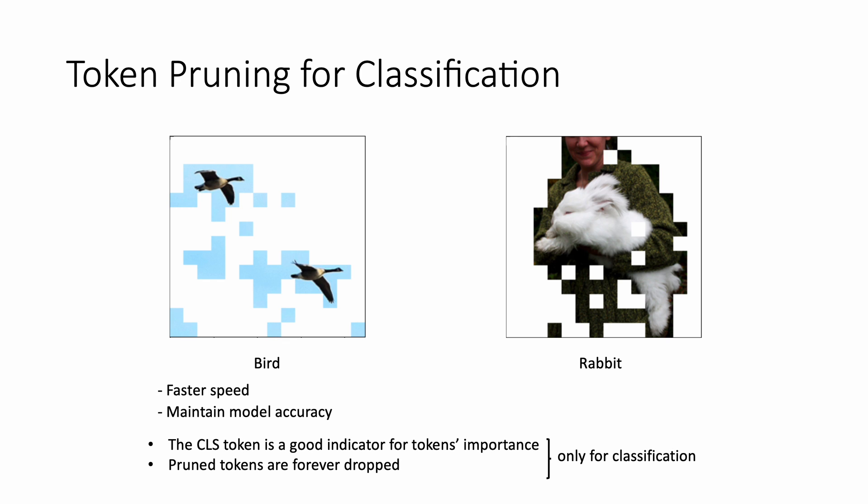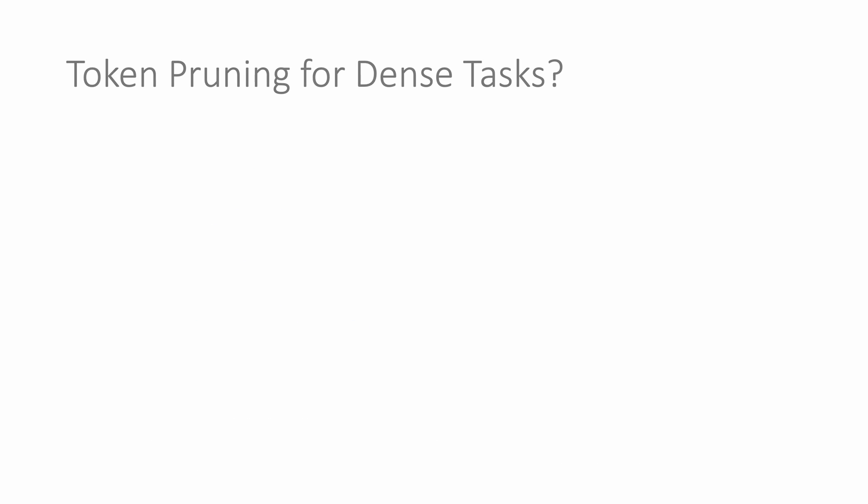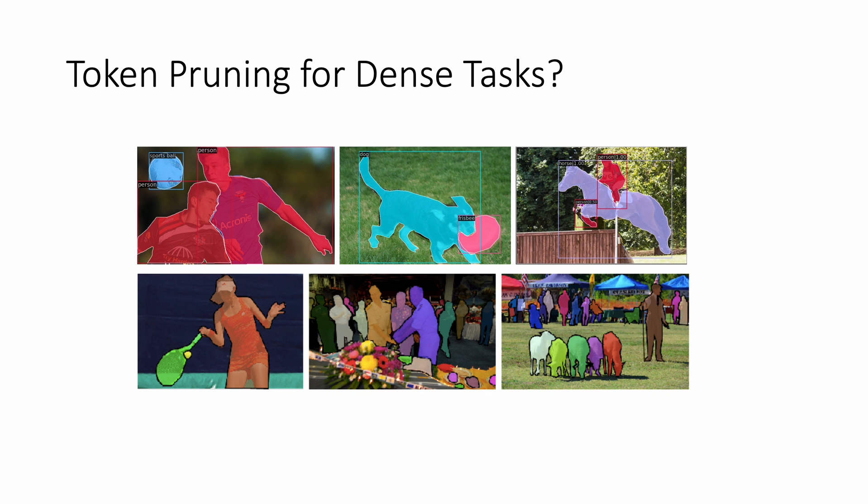However, current methods struggle to extend to downstream tasks and are confined to classification. We therefore ask a question: can token level pruning become compatible with dense prediction tasks?